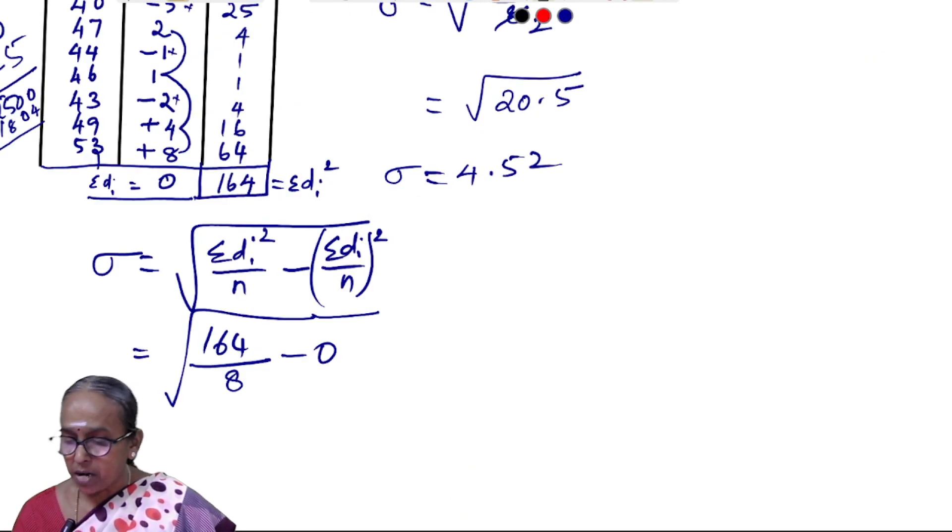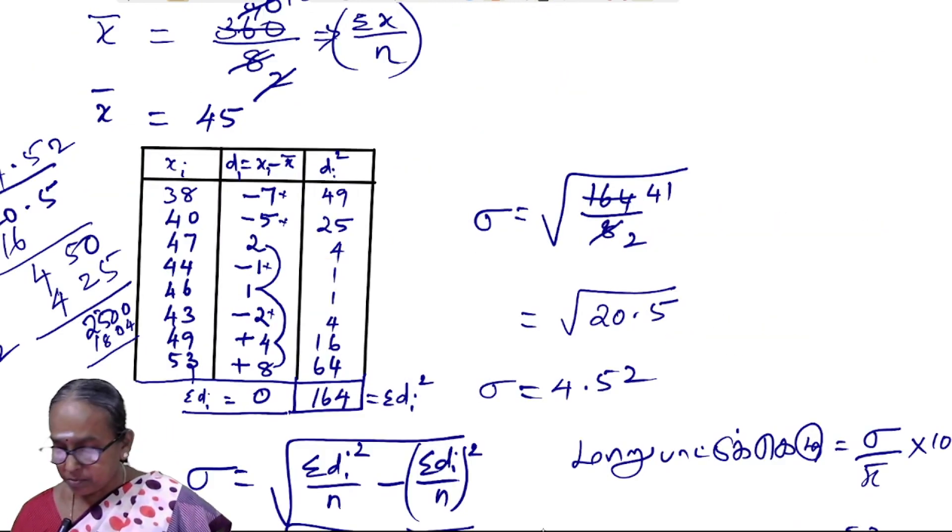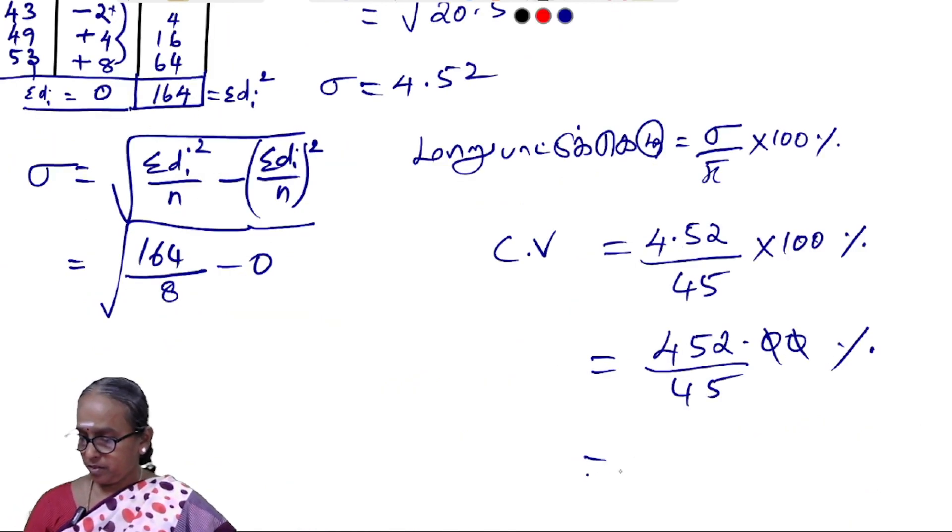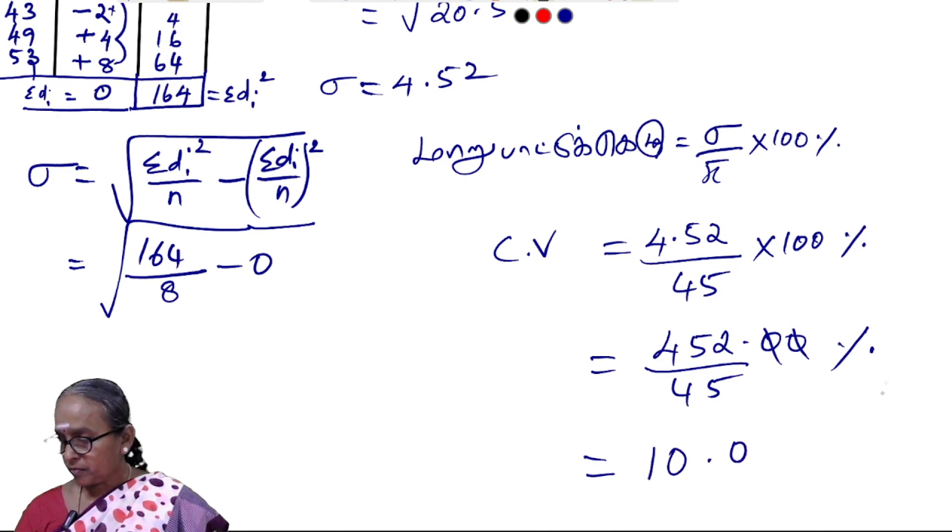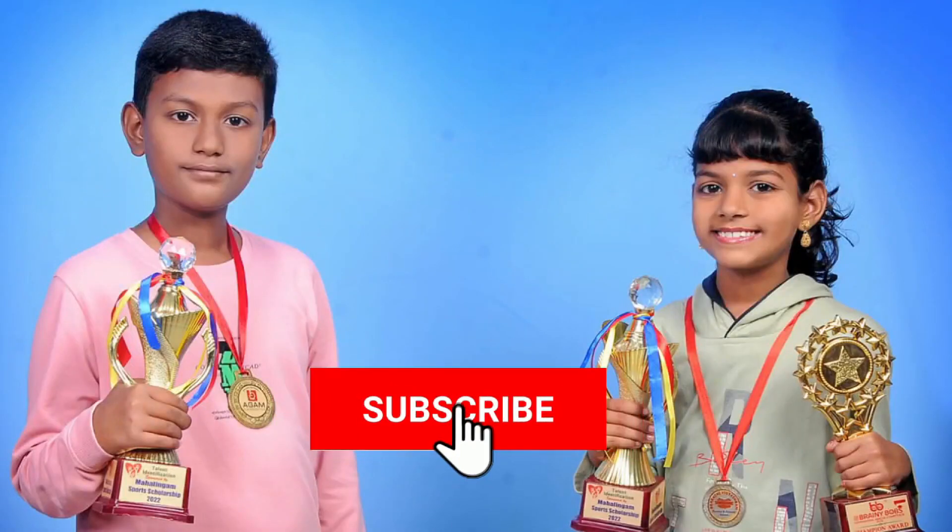Now for the coefficient of variation: CV equals sigma divided by x bar, multiplied by 100 percent. That equals 4.52 divided by 45, times 100, which gives us 10.04 percent.